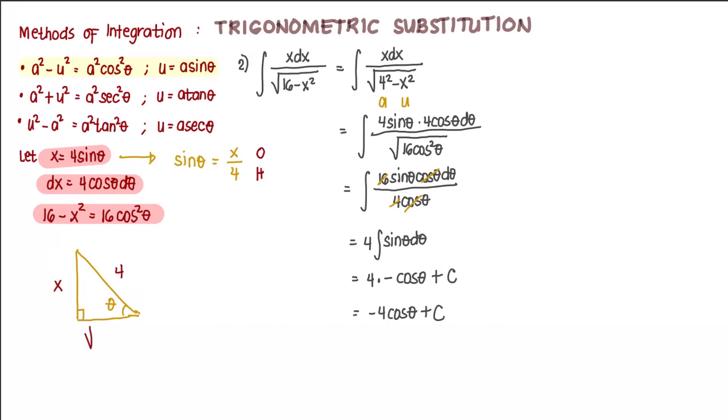Therefore, the adjacent side is 4 squared minus x squared, or that is the square root of 16 minus x squared. And therefore,